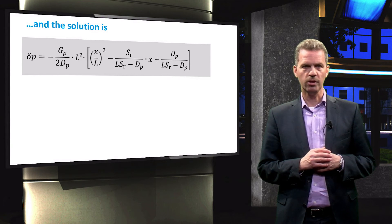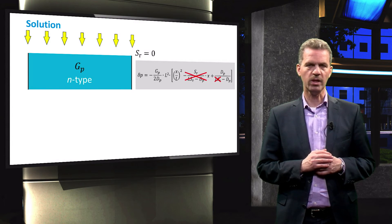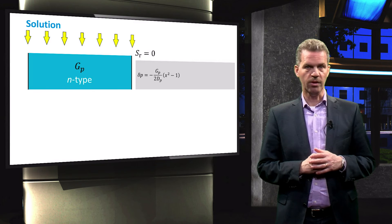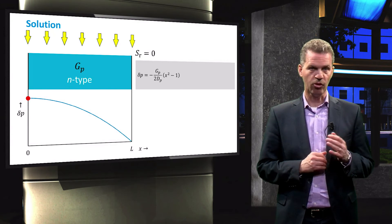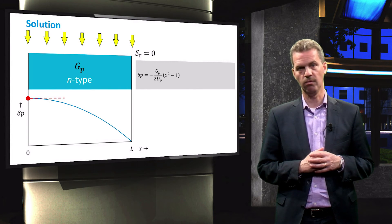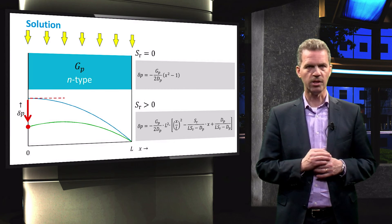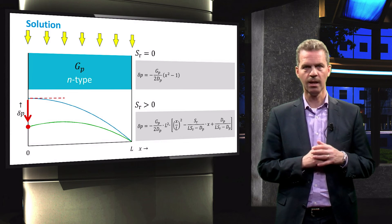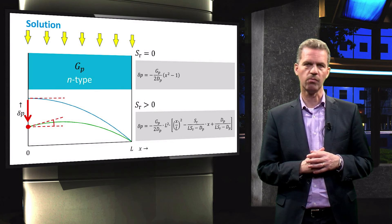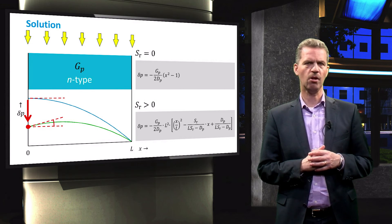Now that we have obtained the solution, we can plot it and see what it looks like. First, let us take the situation where the surface recombination velocity is zero. When this velocity is zero, the solution simplifies to a parabolic relationship, and the graph clearly shows that the slope of the carrier concentration reaches zero at the boundary, expressing the fact that the flow of particles at this surface is zero. When we have a non-zero surface recombination velocity, this results in a decrease in the carrier concentration at the surface and a peak in the concentration profile. It is important to note that the slope of the carrier concentration profile at the surface, which is related to the surface recombination velocity S_R, is non-zero — expressing the fact that there is a hole flow towards the surface where they recombine.